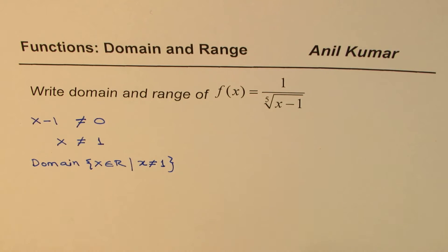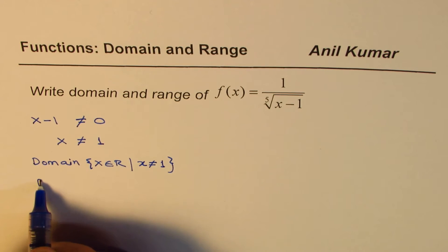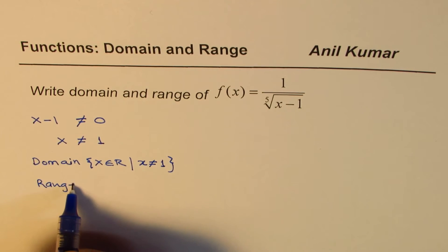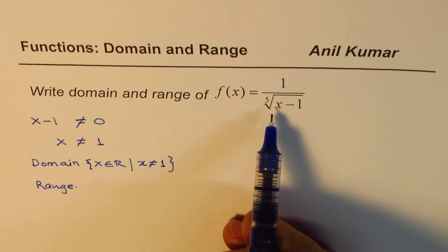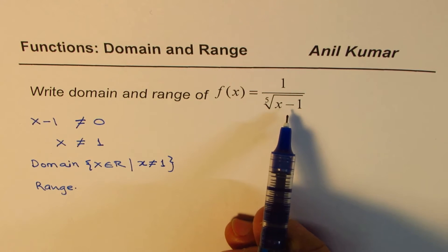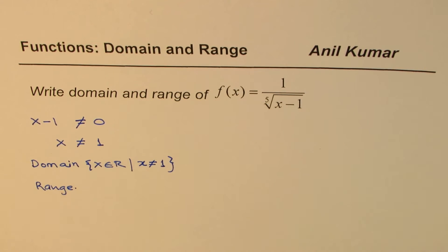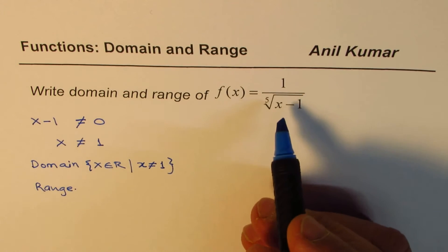Now the question is, how to find range for this function? Since the denominator can have any value, we expect the function to have all the values in the range. You are divided by a number, so it could be any number. However, can the function have 0?